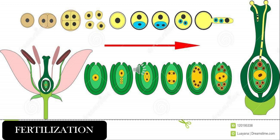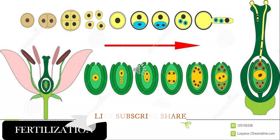After fertilization, the ovary develops into a fruit and the ovules develop into seeds.